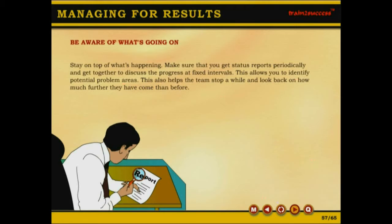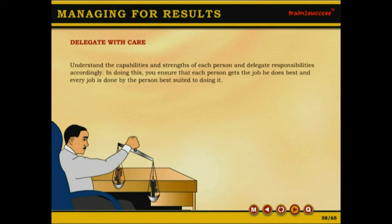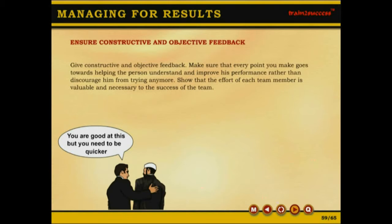Stay on top of what is happening. Make sure that you get status reports periodically and get together to discuss progress at fixed intervals — this allows you to identify potential problem areas and helps the team stop and look back on how much further they have come. Understand the capabilities and strengths of each person and delegate responsibilities accordingly, ensuring that each person gets the job he does best. Make sure that every point you make goes towards helping the person understand and improve his performance rather than discouraging him. Show that the effort of each team member is valuable and necessary to the success of the team.